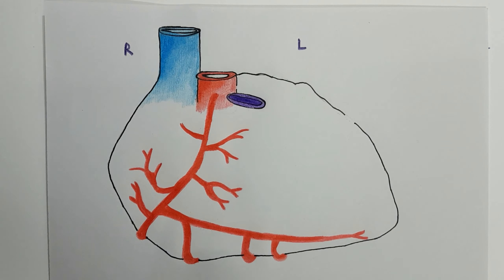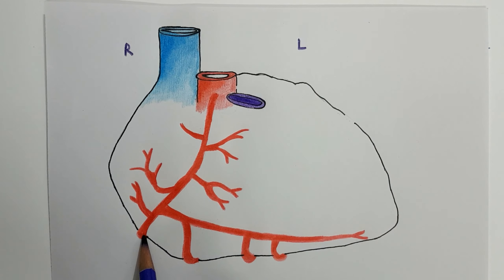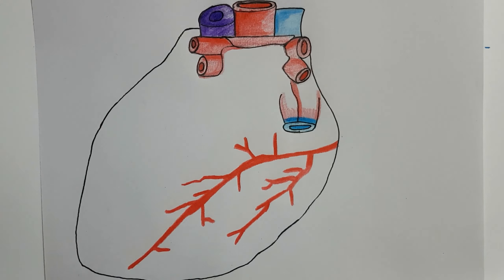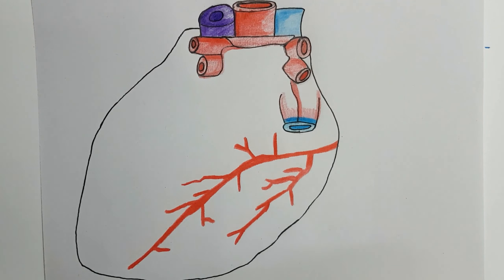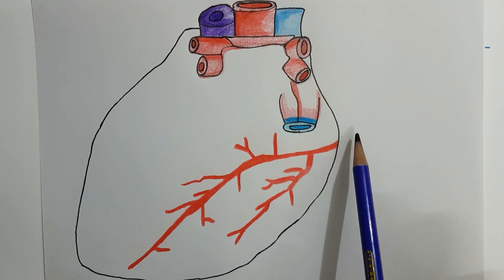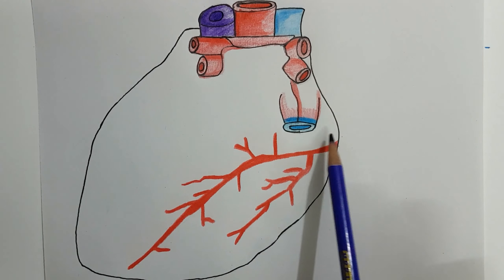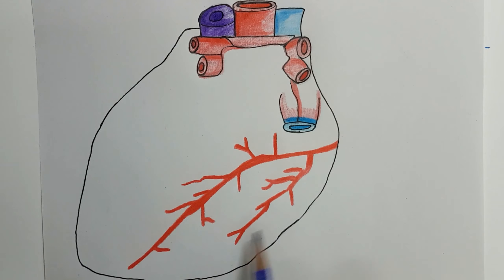After that, it winds around the inferior border and enters the diaphragmatic surface of the heart.